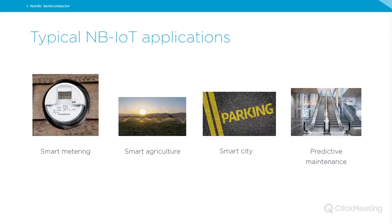Typical NB-IoT applications include smart metering for electrical, gas, or water; smart agriculture with sensors in remote areas that need NB-IoT's extra range; smart city applications such as smart parking, smart lighting, and waste management; and predictive maintenance for elevators, escalators, and factories.